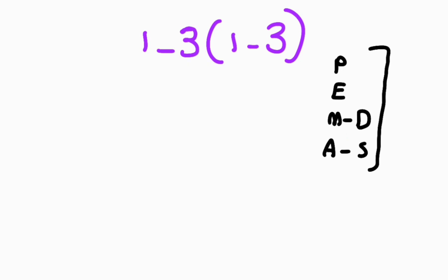Now, according to the PEMDAS, we have one parenthesis that we have to solve first in the first step. Now, 1 minus 3 equals negative 2. Let's rewrite the expression. 1 minus 3 times negative 2.